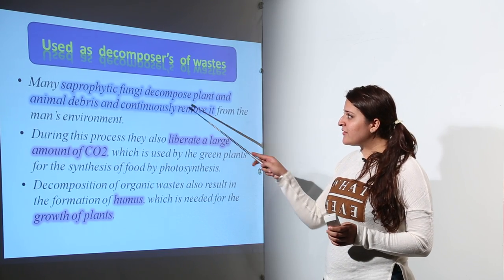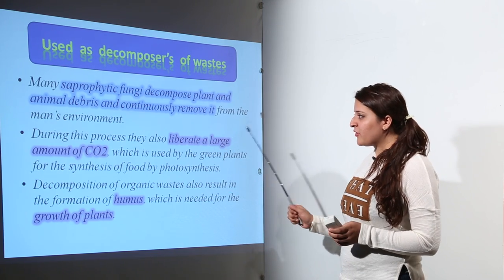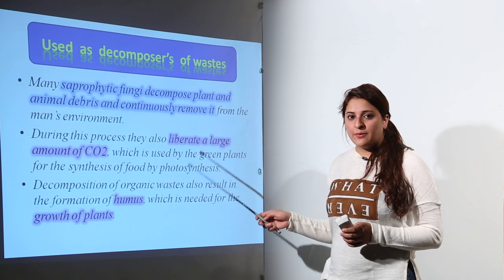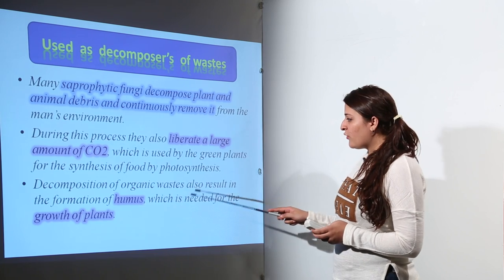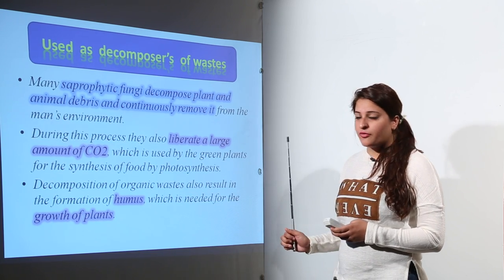When decomposing animal and plant waste, fungi liberate a large amount of carbon dioxide. This carbon dioxide can be used by green plants to carry on photosynthesis. Also, decomposition of organic waste results in formation of humus which is needed for growth of plants.